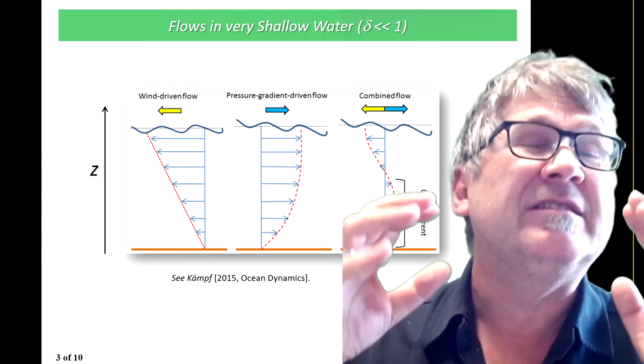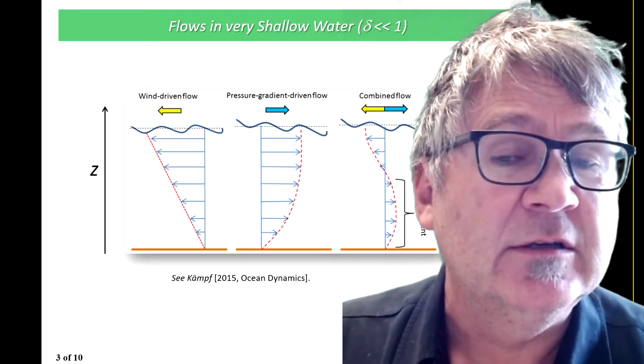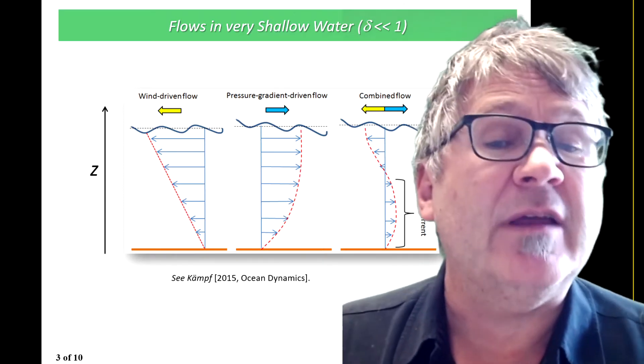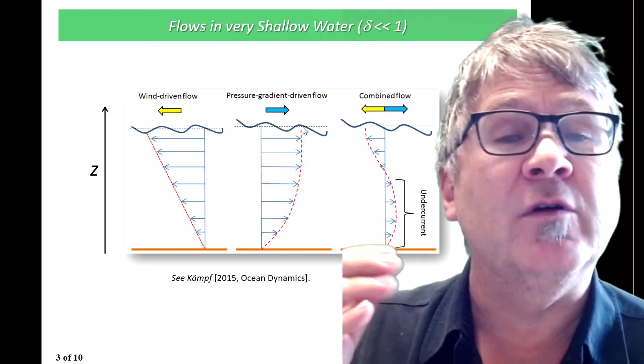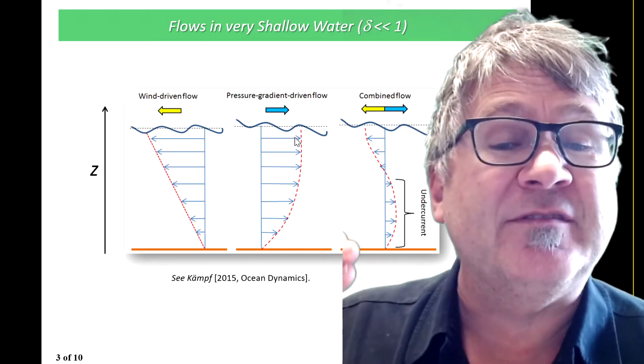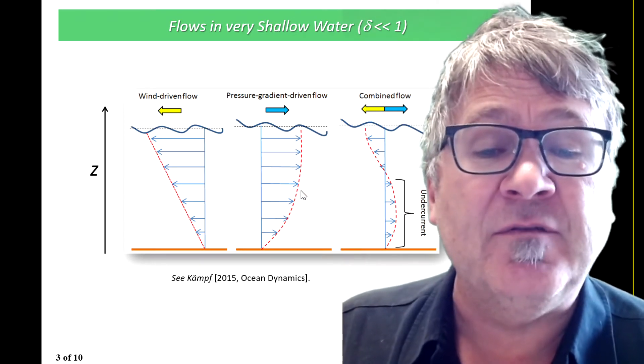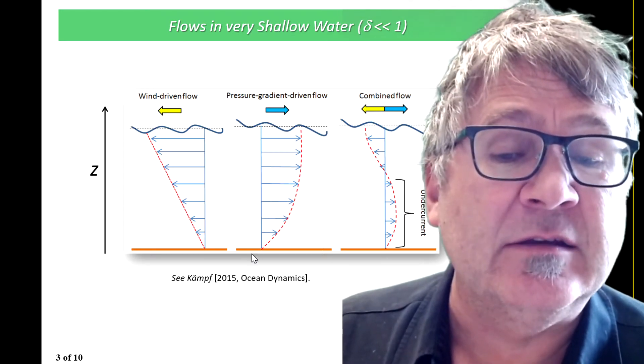Pressure gradient driven flow actually has a slightly different structure. Pressure gradient flow has a structure where the flow doesn't change much with depth near the surface, and then you get a stronger change near the bottom.